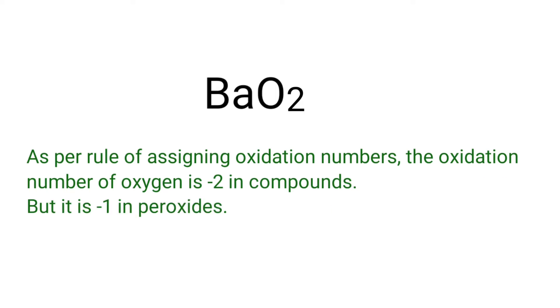As per rule of assigning oxidation numbers, the oxidation number of oxygen is minus 2 in compounds. But it is minus 1 in peroxides. So we can write the oxidation number of oxygen in barium peroxide as minus 1.